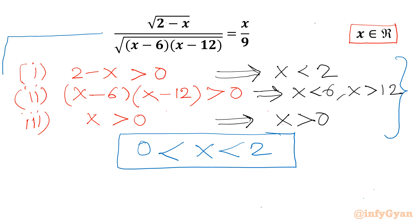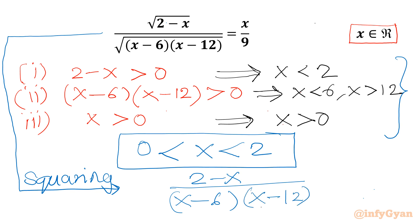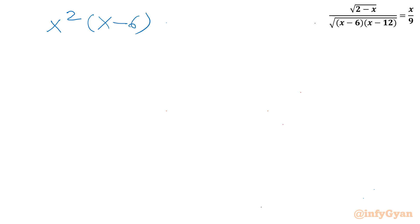Now I will consider our original equation and square both sides. So I can write (2 minus x) divided by (x minus 6)(x minus 12) equals x squared over 81. Now I can cross multiply. Note that x cannot be 6 or 12, as we are looking for real solutions in the interval 0 to 2.